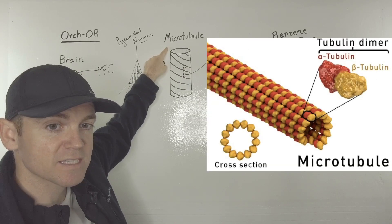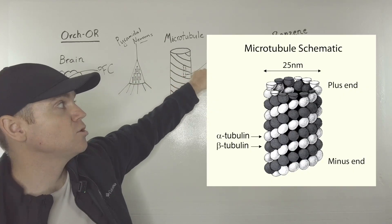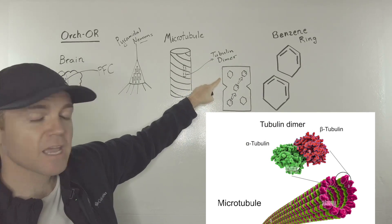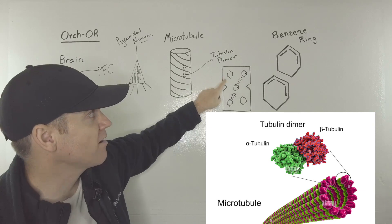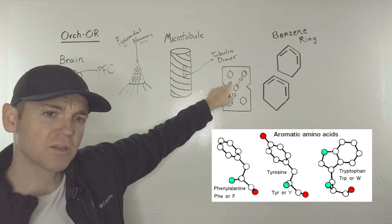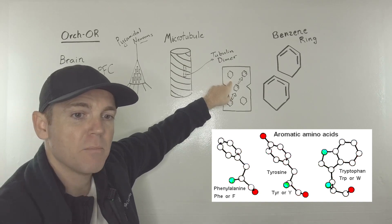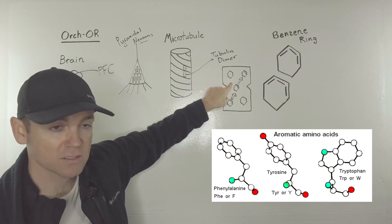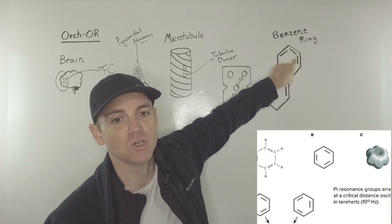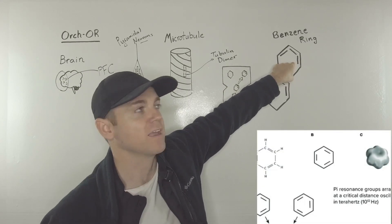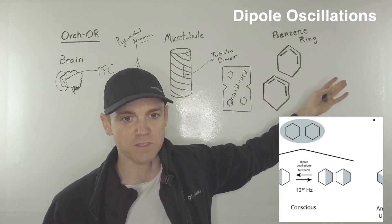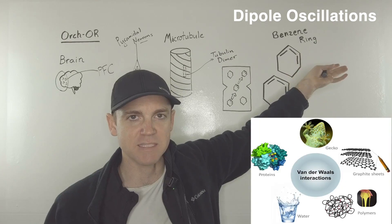These microtubules essentially contain tubulin dimers, which are represented usually like this in the literature. Inside of the tubulin dimer, you have benzene rings, specially oriented within tryptophan, phenylalanine, and other amino acids with aromatic rings. Inside of each one of those benzene rings, you essentially have a direction — a direction of carbon van der Waals forces in the carbon benzene ring.